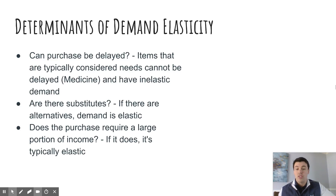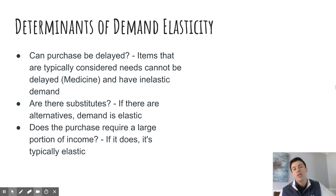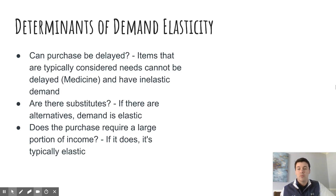Are there going to be substitutes? If there are alternatives, then we're going to tend to have elastic demand for those things. Think of things like any type of clothing item or food items — there are plenty of alternatives for what you can eat. So if something you typically eat doubles in price, you're going to find an alternative and reduce your consumption because that is a more elastic good.